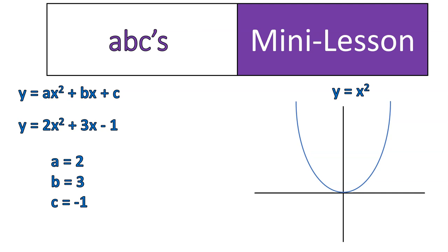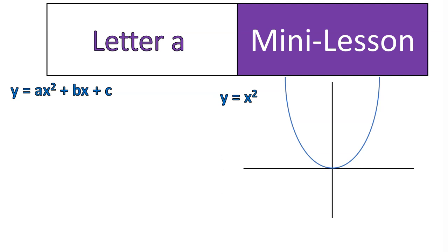b is equal to 3. And c is equal to negative 1. Notice that minus 1 sticks with it. Our c value will include the sign and the value. Now let's see what happens when we actually change these values.